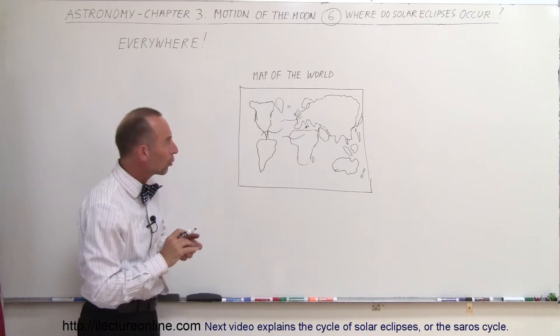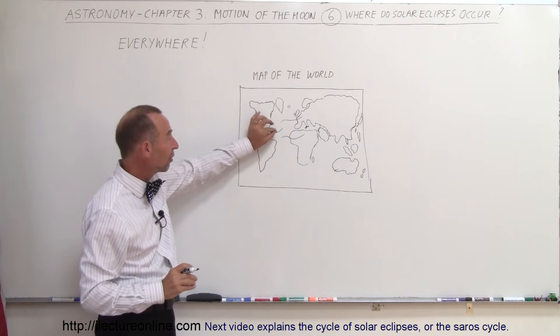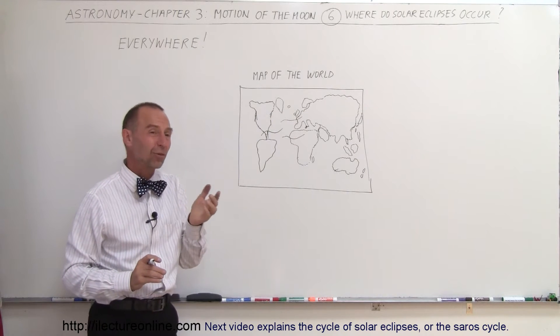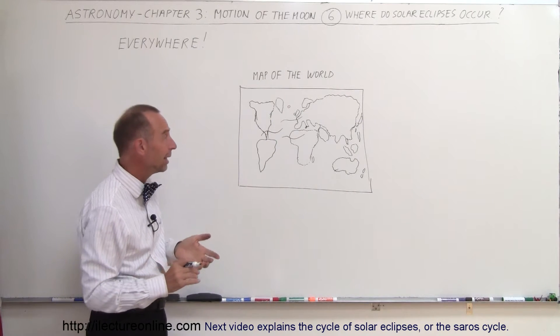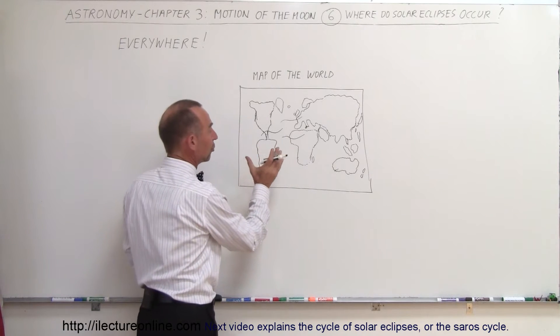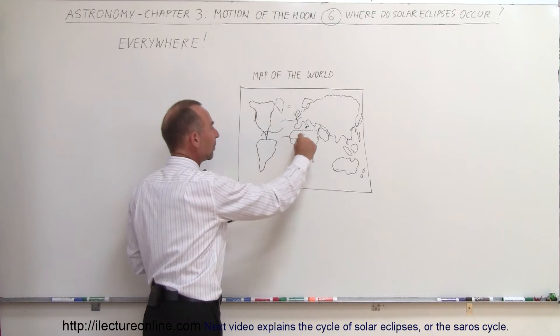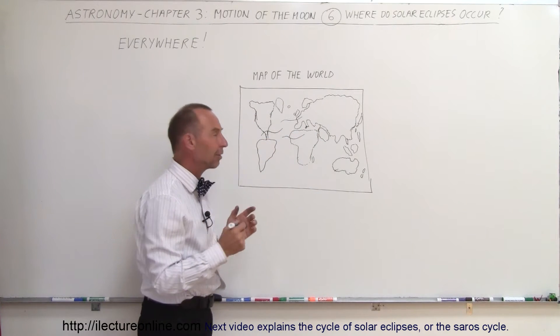And again, the areas on Earth where total solar eclipses can be seen are typically just very thin strips, sometimes only 100 to 200 kilometers wide, and they last for maybe a few minutes as the Earth turns and the shadow casts on the Earth. It typically drills some strip like that of shadow on there.